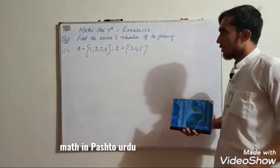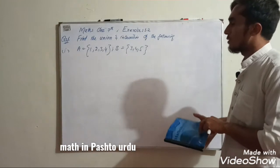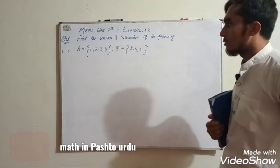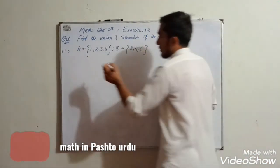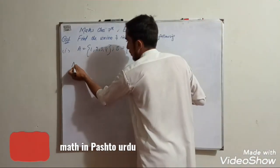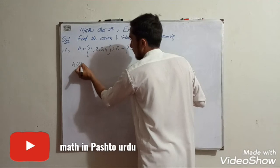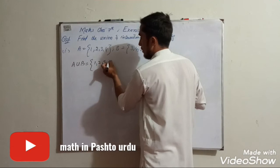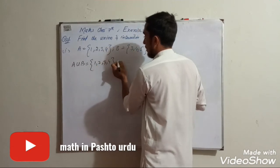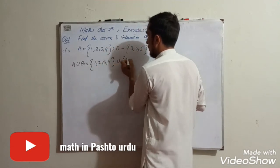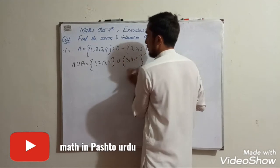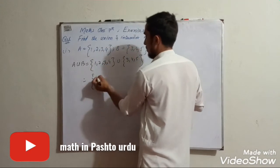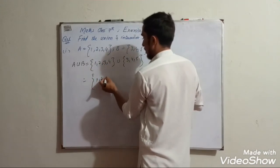For part A, we have both sets A and B. A union B gives us {1, 2, 3, 4}.